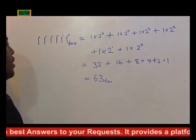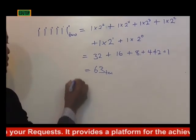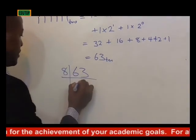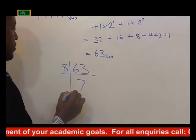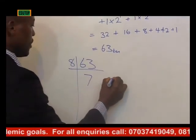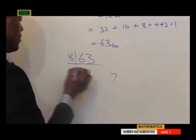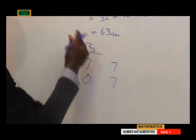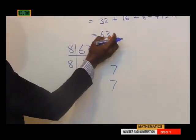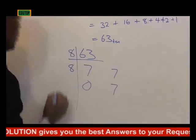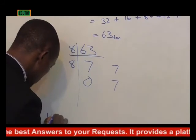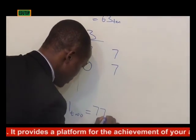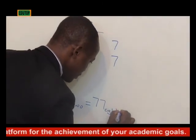Now we convert 63 base 10 to base 8. 63 divided by 8 gives 7, remainder 7, since 8 times 7 is 56 and 63 minus 56 is 7. Since 7 cannot be divided by 8, we write 0 with remainder 7. Reading the remainders upward, 1111111 base 2 equals 77 base 8, which is our final answer. You get it naturally once you follow the normal procedure.